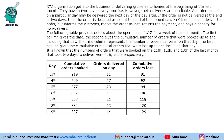Hello everyone, welcome to Aptitude Jab. This is a set from CAT 2020 Slot 3 DILR. It says that XYZ organization got into the business of delivering groceries to home at the beginning of the last month. They have a two-day delivery promise, meaning an order booked on a particular day may be delivered the next day or the day after — so no delivery on the same day.